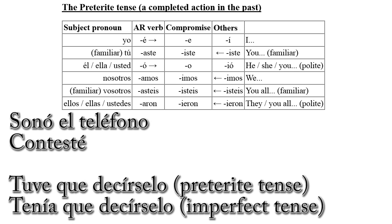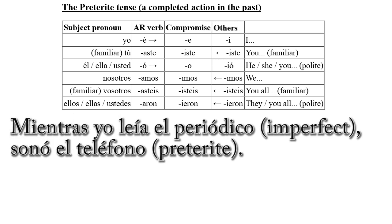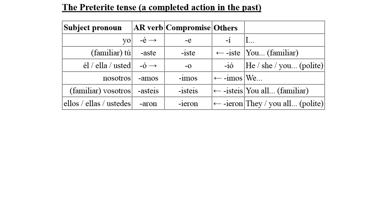Using the preterite, I can narrate a series of events: SONÓ EL TELÉFONO — the phone rang; CONTESTÉ — I answered. If I wanted to say 'I had to tell him,' I can use the preterite and say TUVE QUE DECÍRSELO, which implies that I did. If I used the imperfect tense and said TENÍA QUE DECÍRSELO, then I am just describing that I had to tell him. If I wanted to say a sentence with two events — one that is a background and one is a completed event — I would use the imperfect as the background action. For example: MIENTRAS YO LEÍA EL PERIÓDICO, SONÓ EL TELÉFONO — while I was reading the newspaper, the phone rang. I used the imperfect for the reading because I am just describing what happened; I may have continued reading and ignored the telephone. The ringing is an event with a start and an end, so I used the preterite. Anyway, that's enough for one video. Thank you for watching.